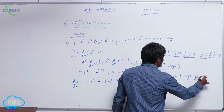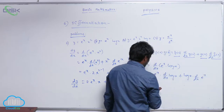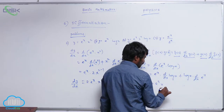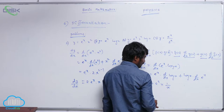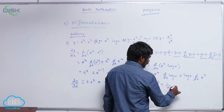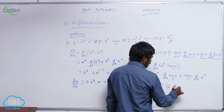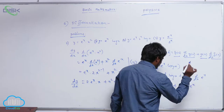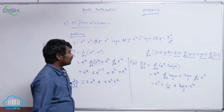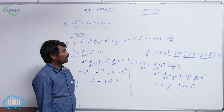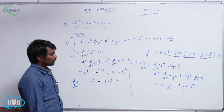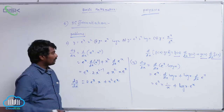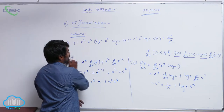So we get: e power x into 1 by x, plus log x into e power x. This is the result for the differentiation of the third problem. Now let us go for the fourth problem.